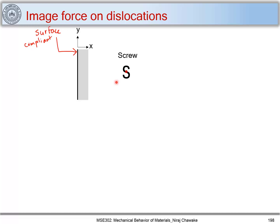What do I mean by compliant? When this dislocation reaches the surface, it can reduce its energy configuration because there will not be any stresses on this surface, and thus the dislocation can attain a lower energy configuration. That is why it gets attracted towards the surface.